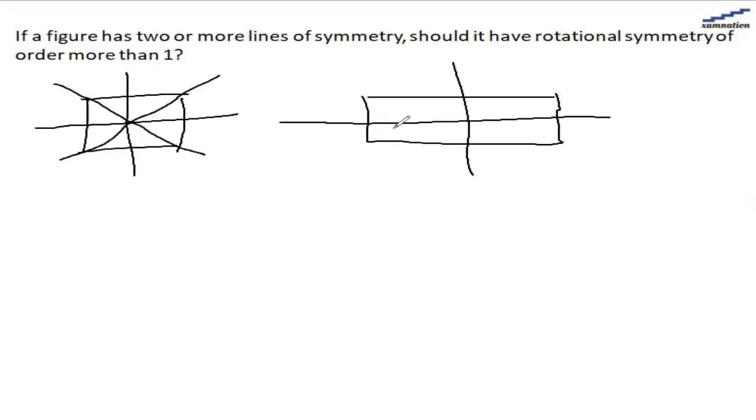So if a figure has two lines of symmetry, it can have rotational symmetry of order more than one. If the figure has two or more lines of symmetry, then it definitely means this figure must have some kind of similarity, and we can basically rotate the figure and get the same figure once we rotate.